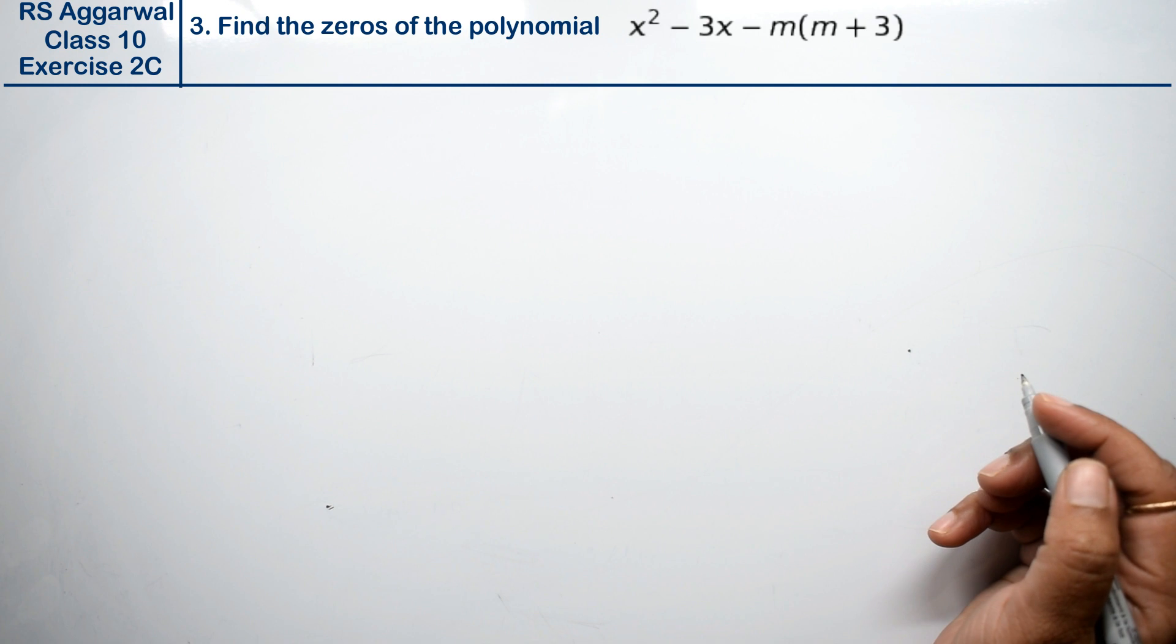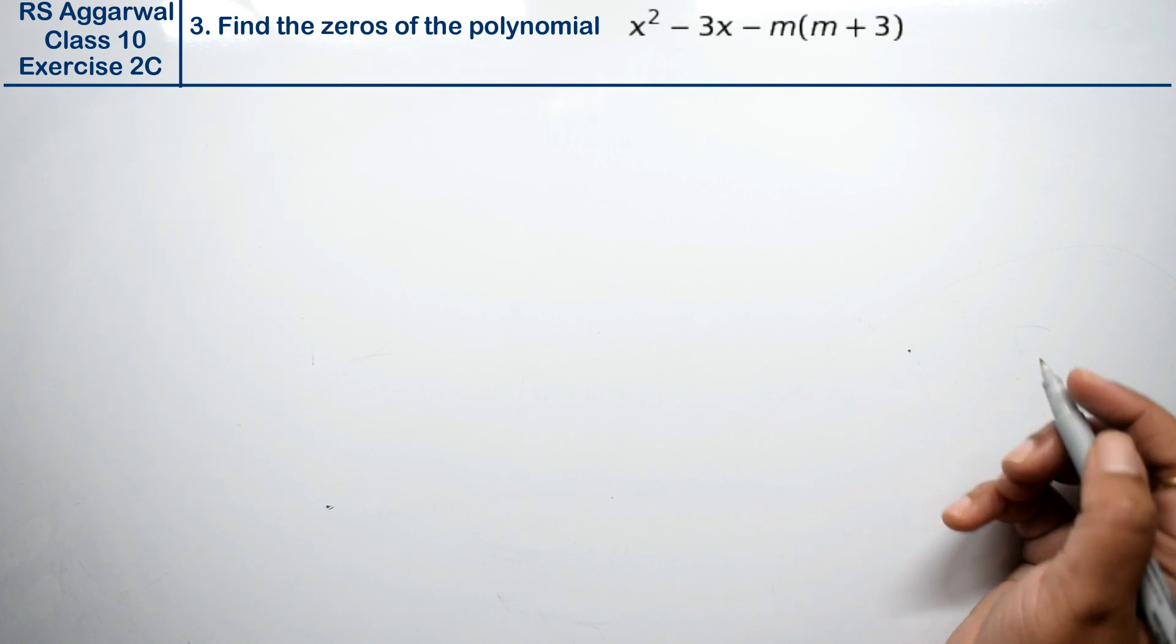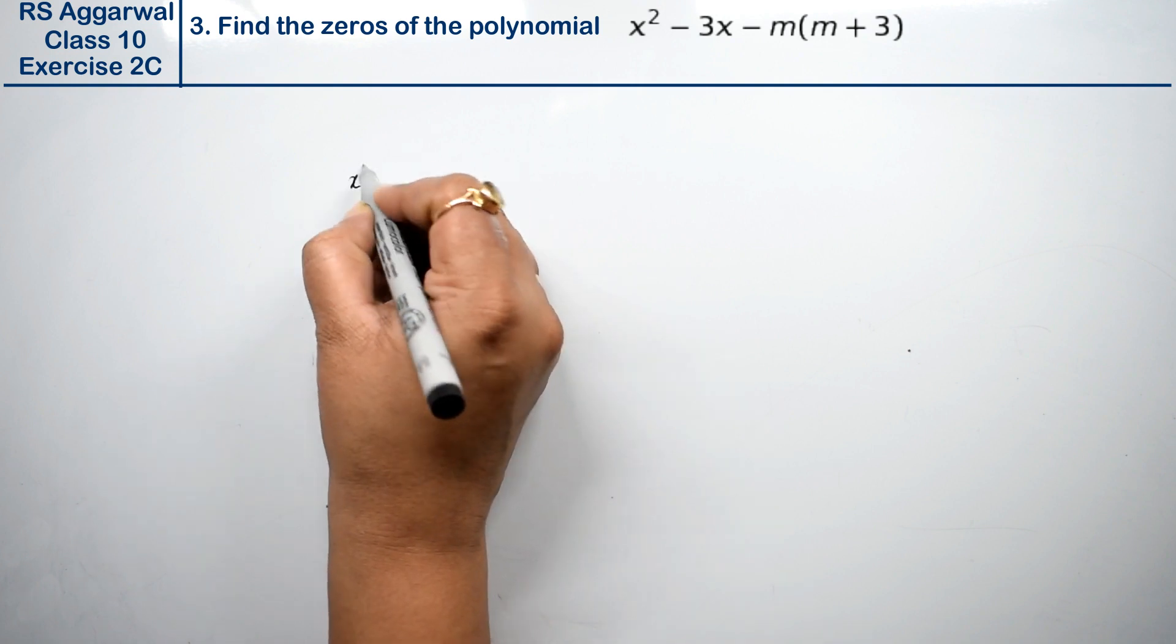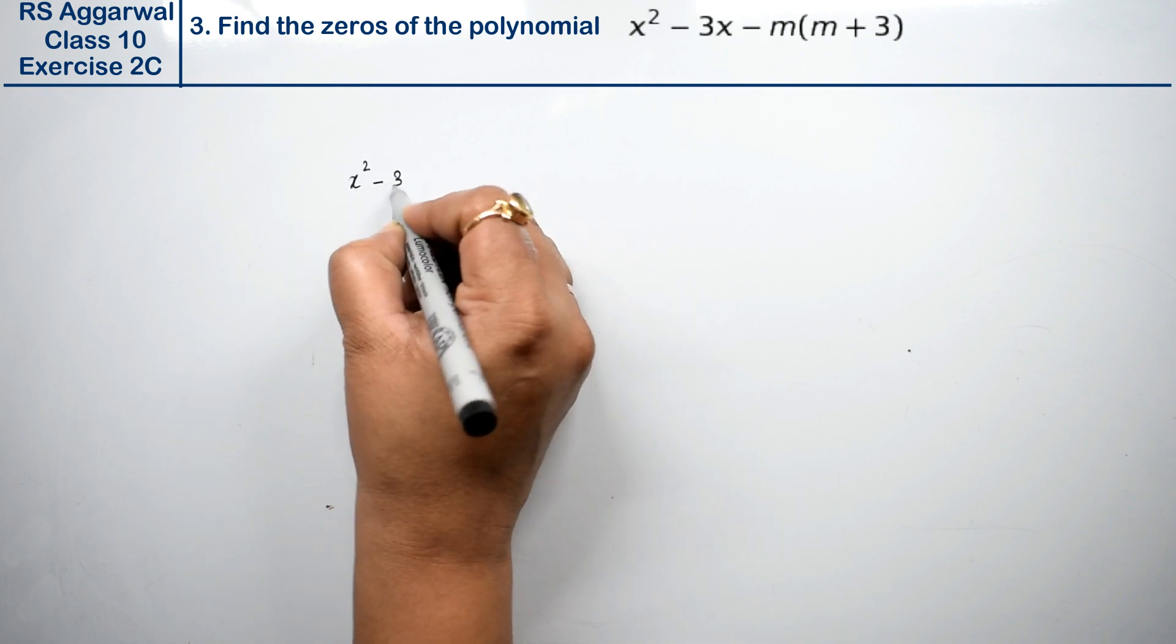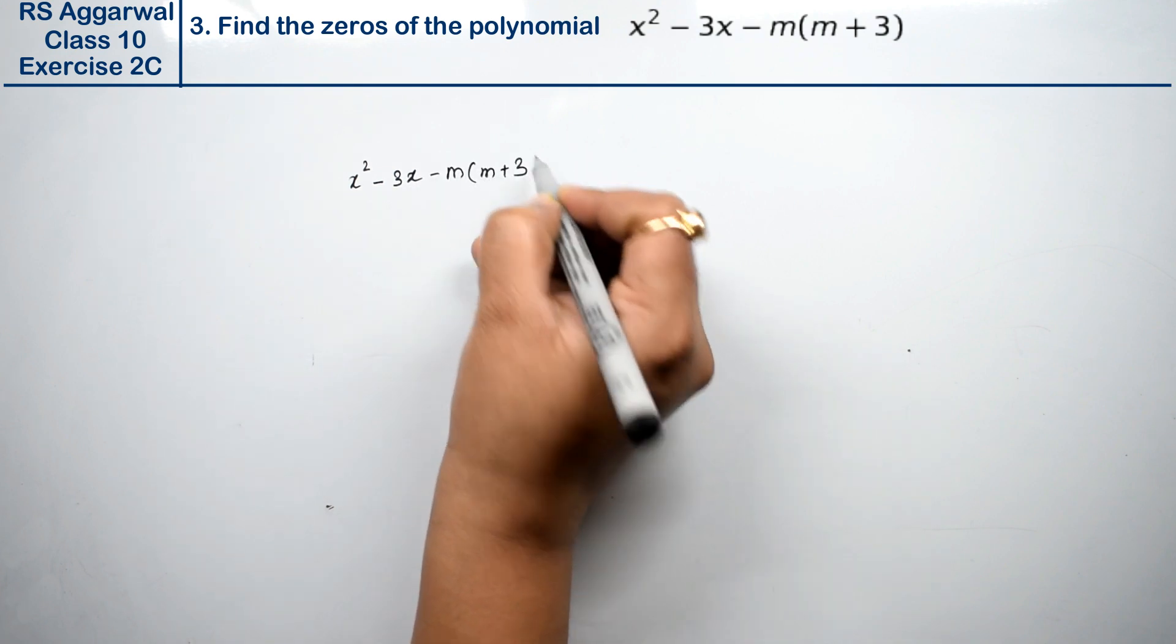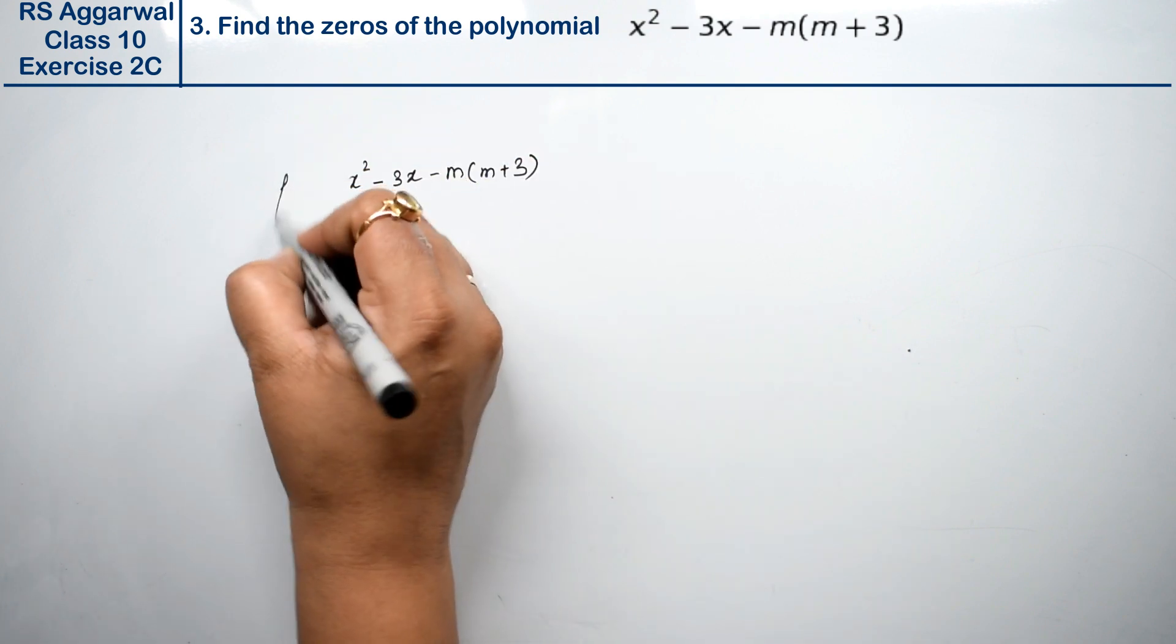Let's do question number 3 of exercise 2C, that is polynomials. Question number 3 is find the zeros of the polynomial. We have to find the zeros of the polynomial x square minus 3x minus m(m + 3).